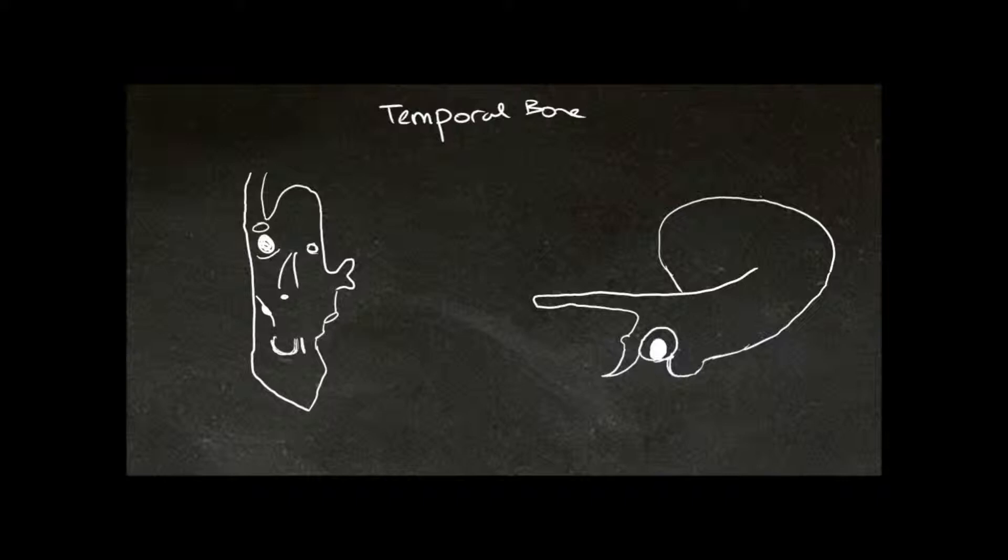Okay, so we're looking at the ectocranial surface. Here is the basal aspect and here is the lateral aspect. First we'll orientate ourselves, and the way we do this is we find the zygomatic process, and this marks the anterior part of the bone.